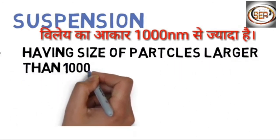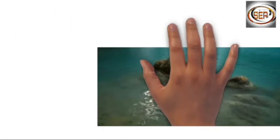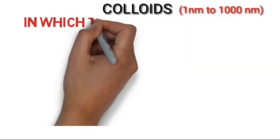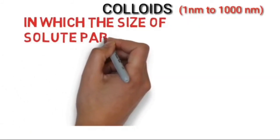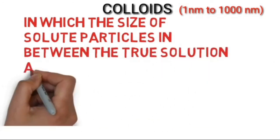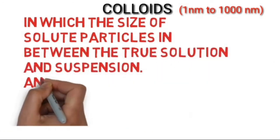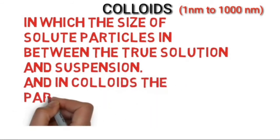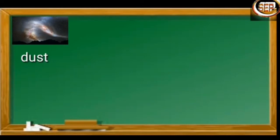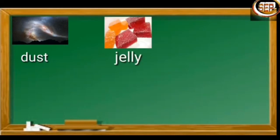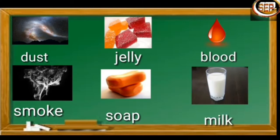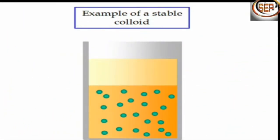The third category is colloids, in which the size of solute particles is between true solution and suspension — that is, from one nanometer to 1000 nanometers. The particles never get settled down. For example: dust, jelly, blood, smoke, soap, milk, etc.